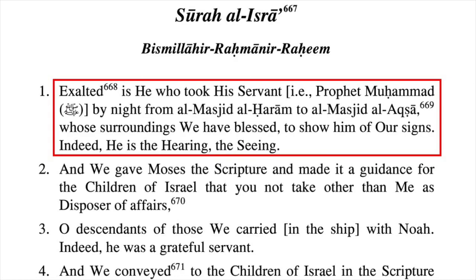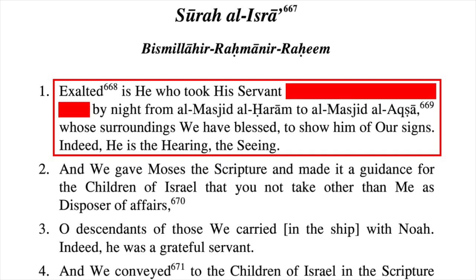The verse says: 'Exalted is he who took his servant' — the translators add 'i.e. Prophet Muhammad' — 'by night, from al-Masjid al-Haram to al-Masjid al-Aqsa, whose surroundings we have blessed, to show him of our signs. Indeed, he is the hearing, the seeing.' Notice there's nothing about a flying donkey taking Muhammad to Jerusalem. Jerusalem isn't even mentioned. Later Muslims identified al-Masjid al-Aqsa as the Temple Mount, but this verse doesn't say any of that. The verse doesn't even mention Muhammad — that was added by translators.